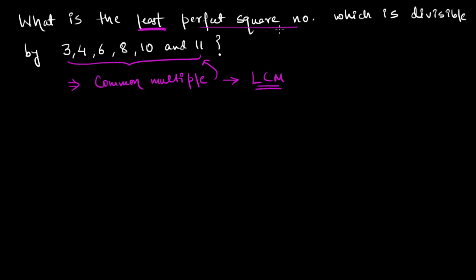First of all, before knowing what this number is, let us try to calculate the lowest common multiple of these given numbers. So here we have 3, 4, 6, 8, 10 and 11.